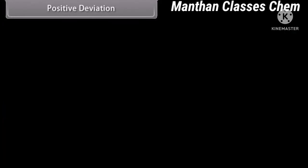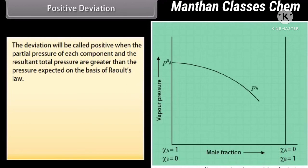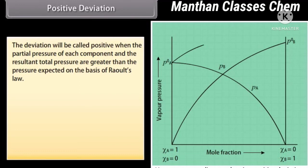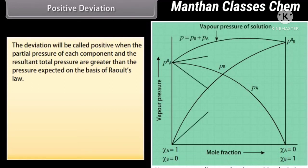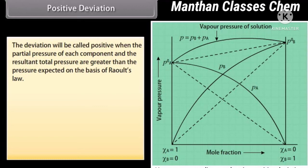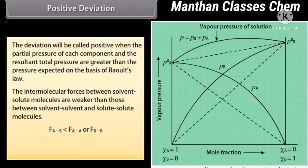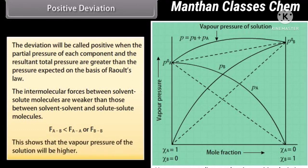Positive Deviation: The deviation is called positive when the partial pressure of each component and the resultant total pressure are greater than the pressure expected on the basis of Raoult's law. For example, solutions of water-ethanol and benzene-acetone show positive deviation. The intermolecular forces between solvent-solute molecules are weaker than those between solvent-solvent and solute-solute molecules, so the vapor pressure of the solution is higher.